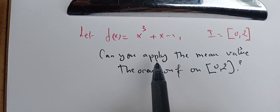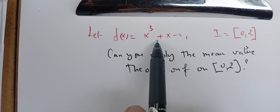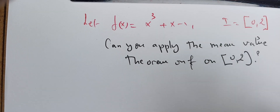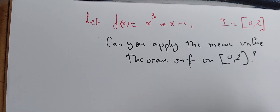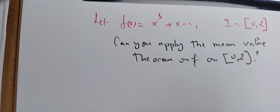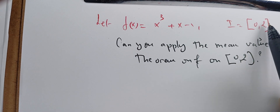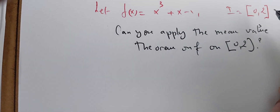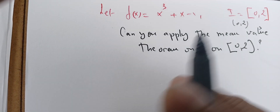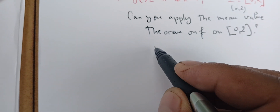We're going to apply the Mean Value Theorem, if we can, on this function f(x) = x³ + x - 1 on the interval [0, 2]. What conditions do we need? First, f is defined on this interval, it's continuous, and it's also differentiable on the interval [0, 2]. Therefore, there exists some c in this interval such that f prime of c equals the difference quotient.